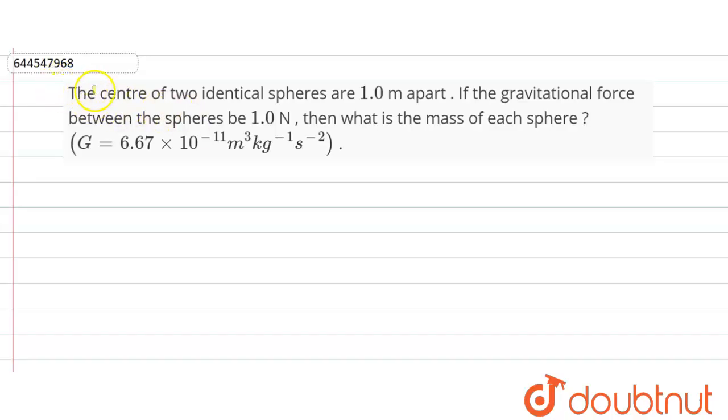Hello friends, question is given here. The center of two identical spheres are 1.0 m apart. If the gravitational force between the spheres is 1.0 N, then what is the mass of each sphere?